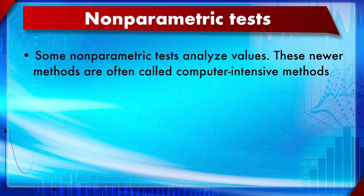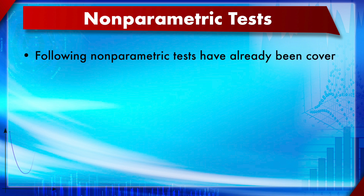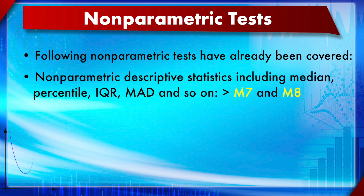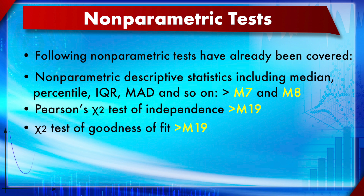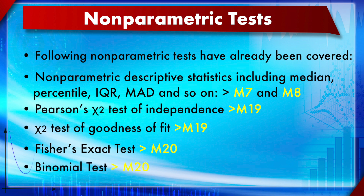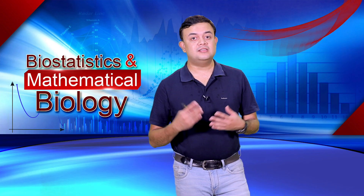Some non-parametric tests analyze values directly; these are newer methods often known as computer-intensive methods, which will be given a brief overview in one of the subsections of this module. Many non-parametric methods have already been discussed in this MOOC, including non-parametric descriptive statistics such as median, percentile, IQR, and MAD in modules 7 and 8, Pearson's chi-square test of independence, chi-square goodness of fit, Fisher's exact test, and binomial test in modules 19 and 20.